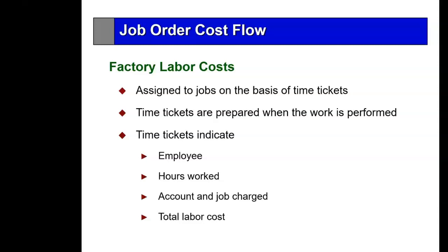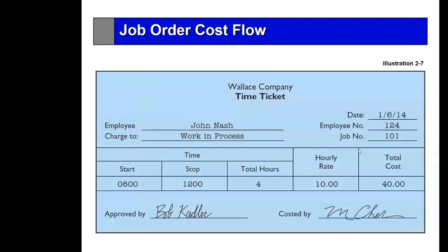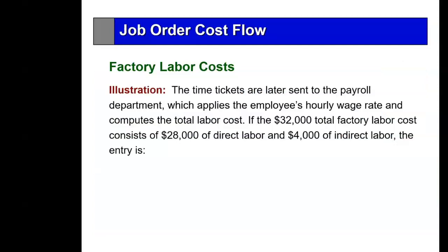We track labor similarly using time tickets. On the factory floor, workers keep track of their time — hours worked, the jobs they worked on, and total costs. A time ticket shows the employee's name, the job they worked on (e.g., job 101), start and end time, hours worked, and their hourly rate. These time tickets are later sent to the payroll department and employee wages are paid.